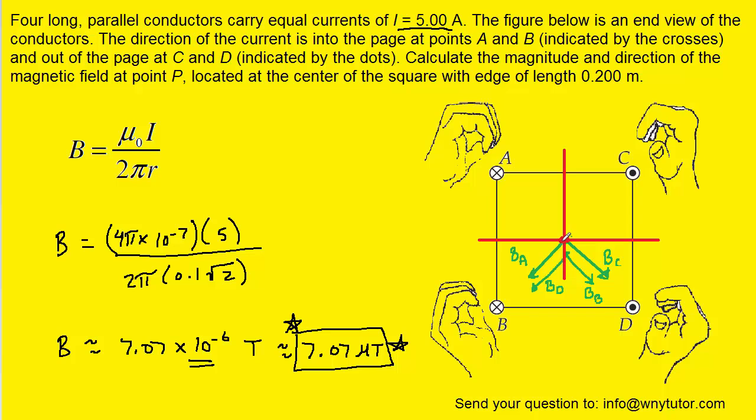Now the next part is very important. Notice for B_A that it can be broken into an X component that points to the left as well as a Y component that points down. Notice the same thing would be true for B_D because it's pointing in the exact same direction. So there would be an X component and a Y component. Now onto B_C there's an X component but this time that X component points to the right. The Y component still points downward. For B_B again an X component that points to the right and a Y component that points downward.